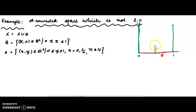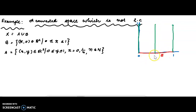At x equal to 1/2, y varies from 0 to 1. Similarly at x equal to 1/3, y varies from 0 to 1. These are the vertical line segments at x = 1/2 and x = 1/3.